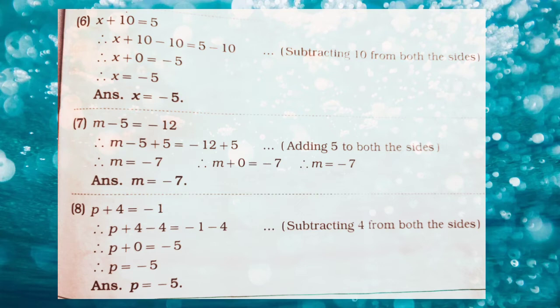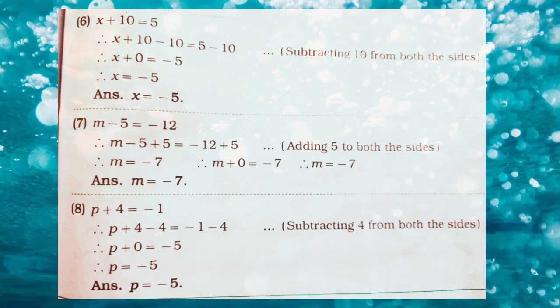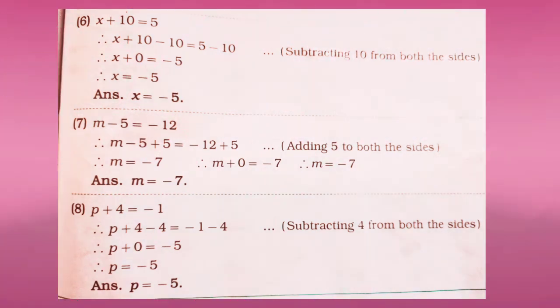The 7th question is m minus 5 is equal to minus 12. Here minus 5 is there, so we will add 5 to both the sides. The answer is m is equal to minus 7. The eighth question is p plus 4 is equal to minus 1. We will subtract 4 from both the sides. So the value of p is equal to minus 5.